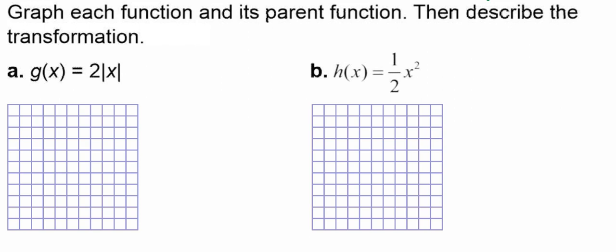If we look at letter A, we have g of x equals 2 times the absolute value of x. That tells us that this is an absolute value equation, and its parent function, we'll call it f of x, equals the absolute value of x. So we're going to go ahead and graph this and see what it looks like. And we're going to use Desmos for this one, so you can see how to do it there, too.